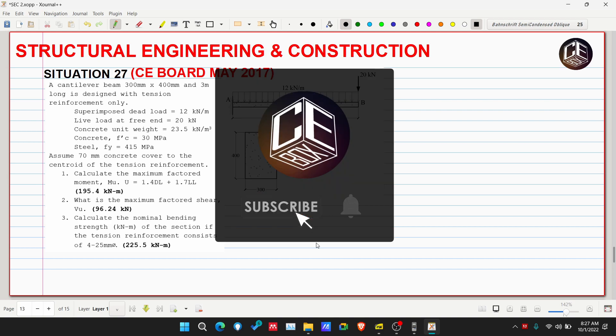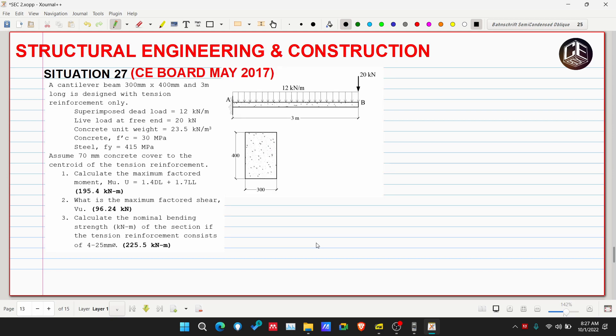A cantilever beam 300 millimeters by 400 millimeters and three meters long is designed with tension reinforcement only. Superimposed dead load is 12 kilonewtons per meter, live load at free end is 20 kilonewtons.